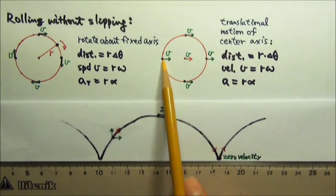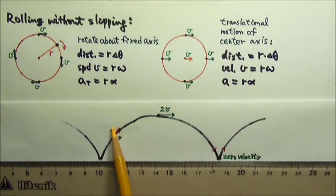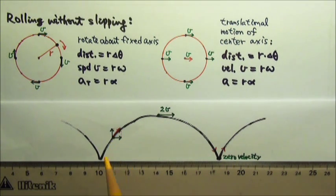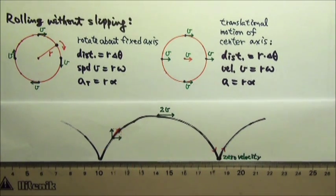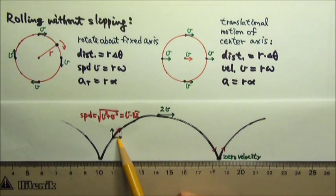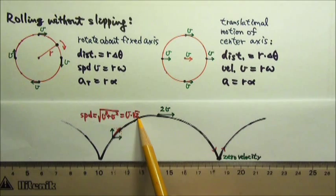For this point on the cap, it has two velocities, and we have to add these two velocities together by adding vectors, so the sum is the diagonal of this rectangle. This rectangle happens to be a square, and each side of the square is v, so the diagonal must be v times the square root of 2. Or we can use the Pythagorean theorem: the diagonal is the square root of the x component squared plus the y component squared, which gives us v times square root of 2.